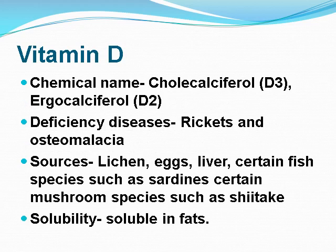Vitamin D: its chemical name is cholecalciferol (D3) and ergocalciferol (D2). Deficiency diseases include rickets and osteomalacia. Sources include lichen, eggs, liver, certain fish species such as sardines, and certain mushroom species.